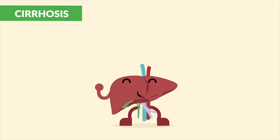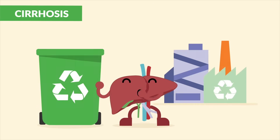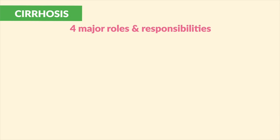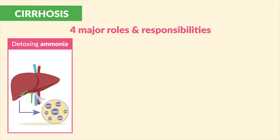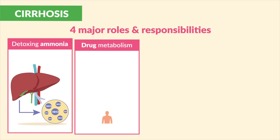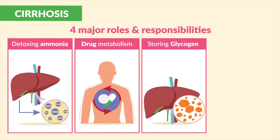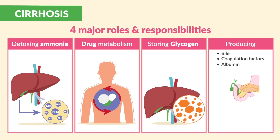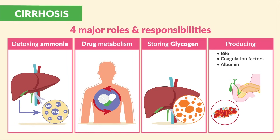The liver acts like a recycling company with four major roles and responsibilities: detoxing ammonia (a waste product of protein), drug metabolism, storing glycogen, producing bile, coagulation factors, and albumin. Coagulation factors are our clotting factors to prevent bleeding, and albumin is used for drug transportation as well as to attract water into the vascular spaces.